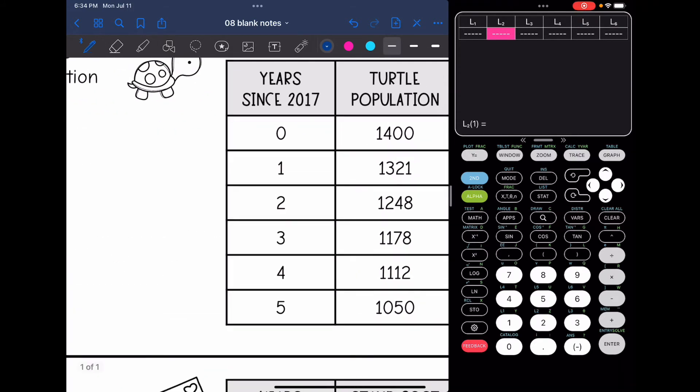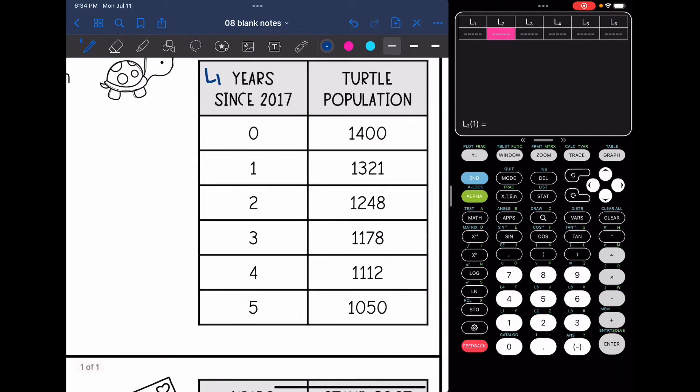Okay, now the years since 2017 will go in L1 and the turtle population will go in L2. So 0, 1, 2, 3, 4, 5 go in L1 and 1,400, 1,321, 1,248, 1,178, 1,112 and 1050 go in L2.